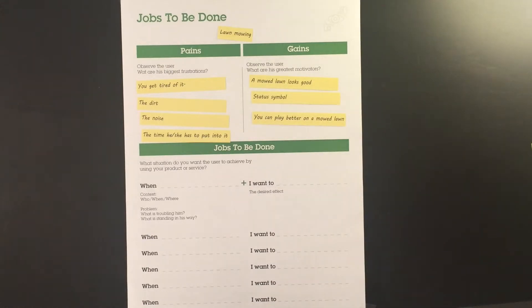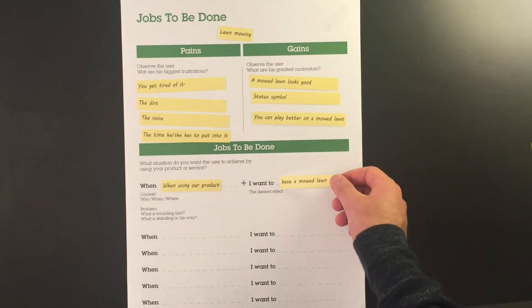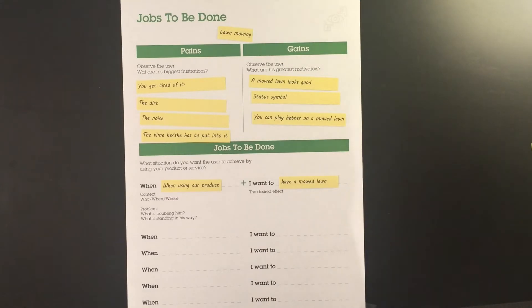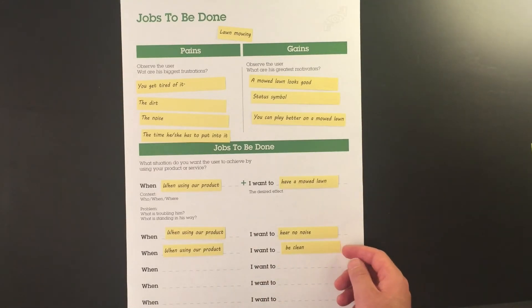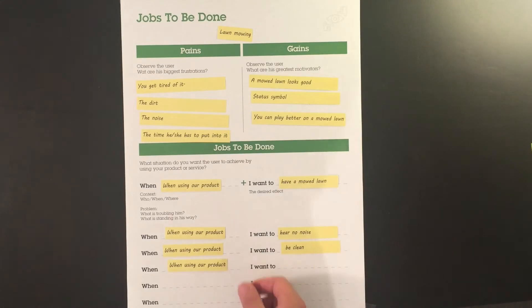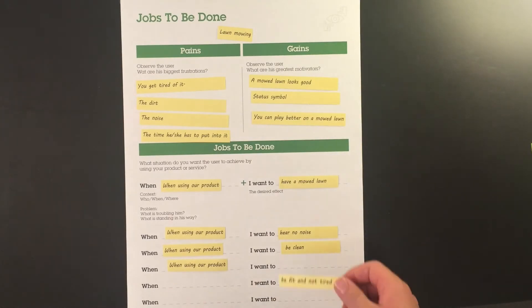The job to be done can be defined with a few sentences which tell you what has to be done with the new solution. When using our new product, I want to have a mowed lawn of course, but I also want to hear no noise, be clean after it, and be fit and not tired.